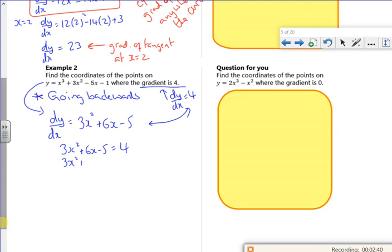So then I've got 3x squared plus 6x minus 9 is 0. If I put that into poly, it gives me x is minus 3 or x is 1.